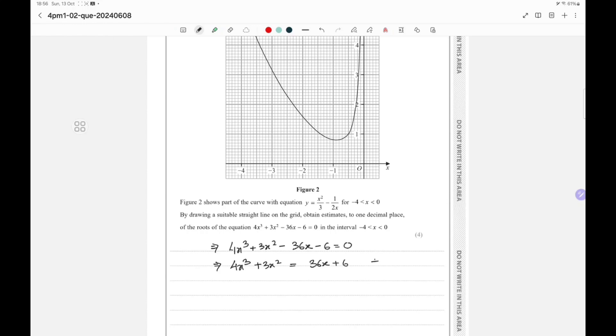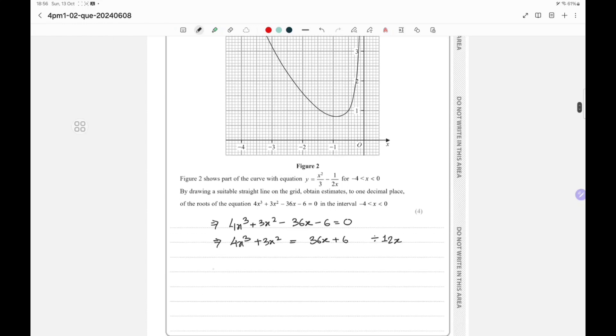And I divide this entire equation by 12x. So here I will be left with 4x cube divided by 12x plus 3x square divided by 12x equals 36x divided by 12x plus 6 by 12x.